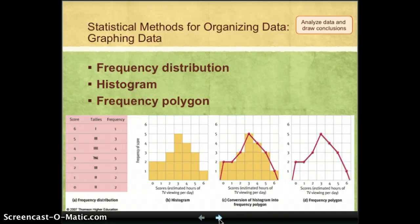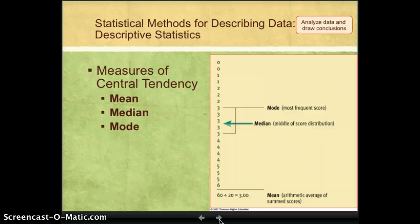Some other things we can do to describe a particular set of data is we could use descriptive statistics. One descriptive statistic is, what is the middle score? So, in the case of our six-point quiz, you may want to know, what was the middle score?